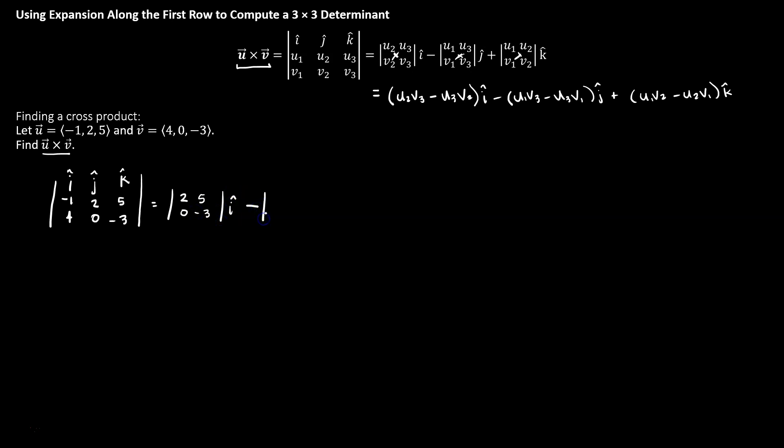So we're going to have a minus for this next matrix, think about j, ignore everything below and horizontal to it, copy down our j hat, and then plus, think about k, ignore everything below and horizontal, we get the matrix using the remaining terms.